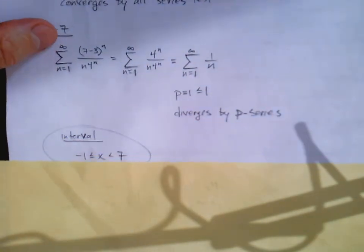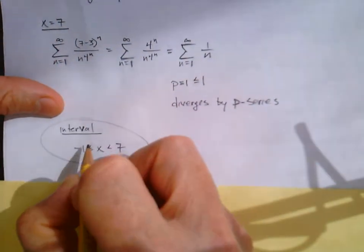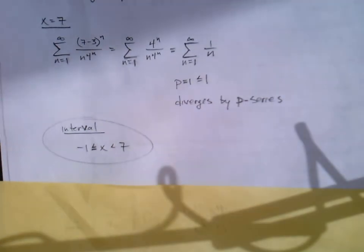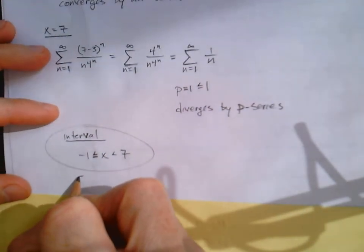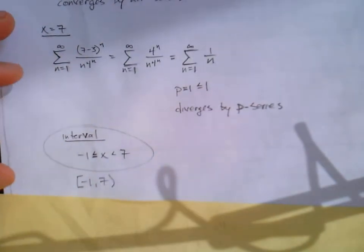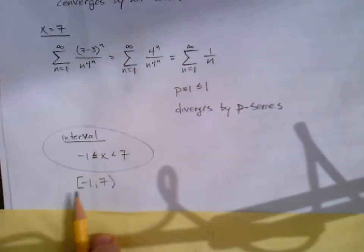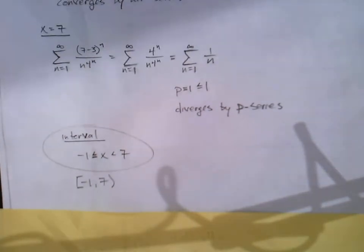So our interval of convergence is from negative 1 to 7. And I think I wrote it in interval notation on the last one: negative 1 to 7 like that. You could write it that way too. I kind of prefer that way. And that is section 11.8, finding radius and interval of convergence of power series. So go check out the homework, and I'll see you in the Zoom session.